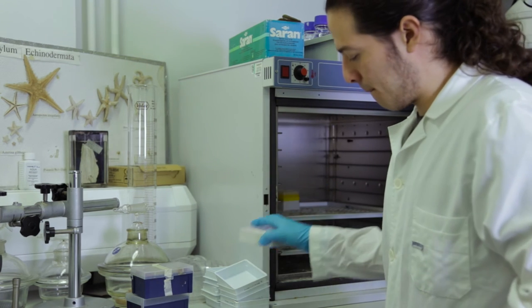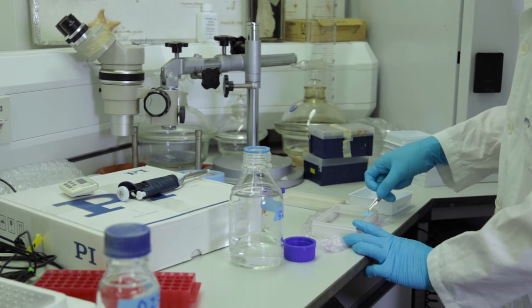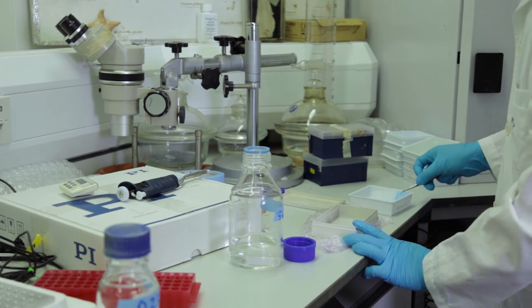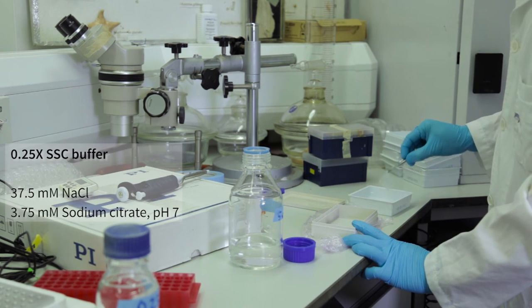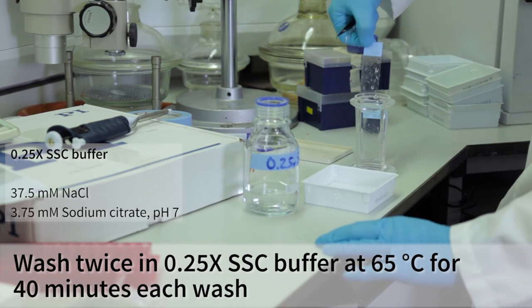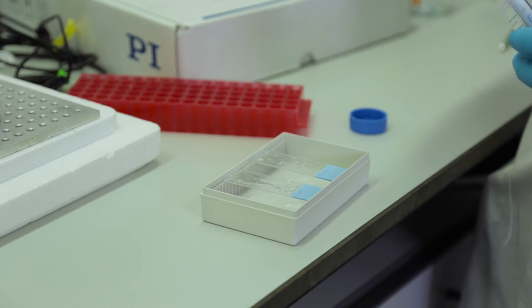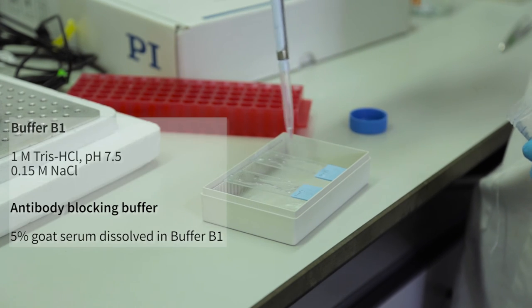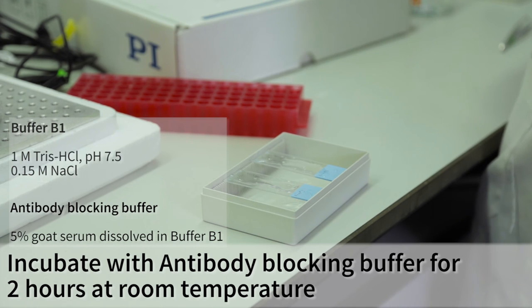Today, I will wash the slides to remove any non-specific binding of the probe. For this, I will remove the plastic tray from the oven and wash the slides in SSC buffer for 40 minutes twice. Next, I need to block any non-specific sites for the anti-digoxigenin antibodies, so I will add antibody blocking buffer and leave for 2 hours at room temperature.